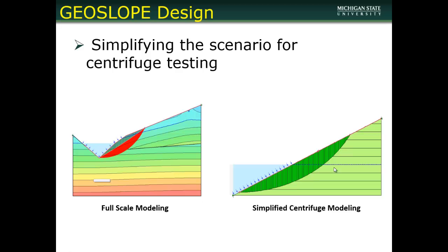To model this in GeoSlope and get a base design for the centrifuge, we started out by modeling the full-scale occurrence — approximately 900 meters tall and about 1,800 meters wide. We modeled the two primary soil types, as well as the additional slip surface and tension cracks, and the pore water pressure occurring due to the reservoir. The pressure levels are indicated by rainbow colors, and the solid blue triangle is the actual reservoir.